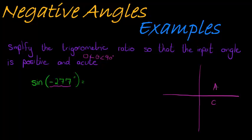So here's our CAST diagram. This does not change at all. The only difference is when we work with negative angles, we label our axes differently. This is negative 90 degrees, that is negative 180 degrees, this is negative 270 degrees and that is negative 360 degrees.